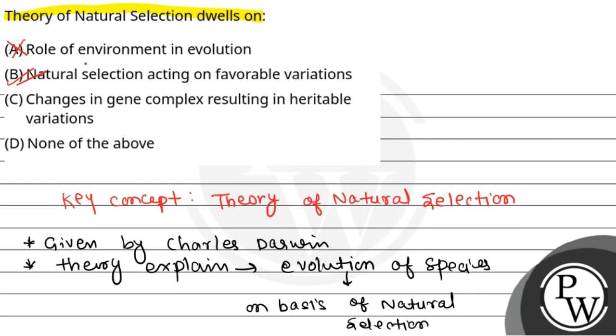Option C is changes in gene complex resulting in heritable variation. This is incorrect because while gene variation is the source of variation which is crucial in evolution, natural selection acts on these variations rather than creating them. So this is incorrect.